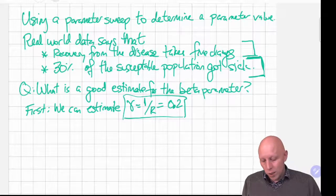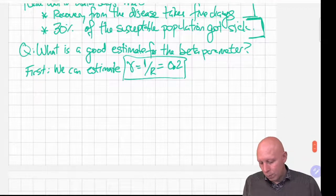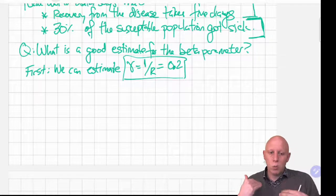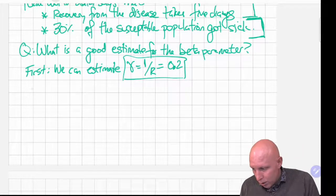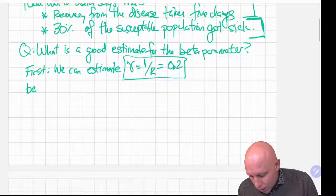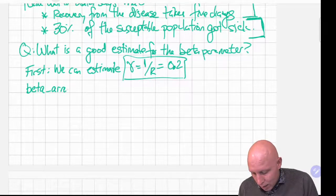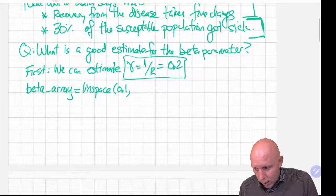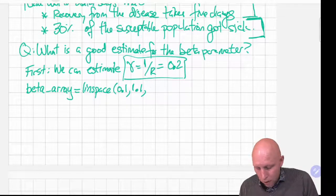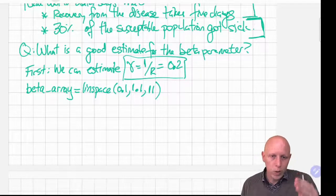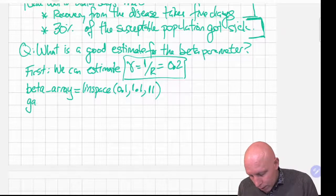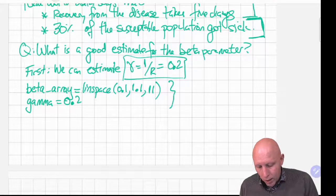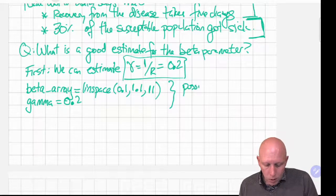And now we're going to sweep our beta series. So let's create a function that returns what that series is. We're going to define beta array to be equal to 0.1 up to 1.1 with 11 different options. So that's 0.1, 0.2 up to 1.1 and we're going to define gamma to be equal to one-fifth or 0.2. So these are our possible beta values.